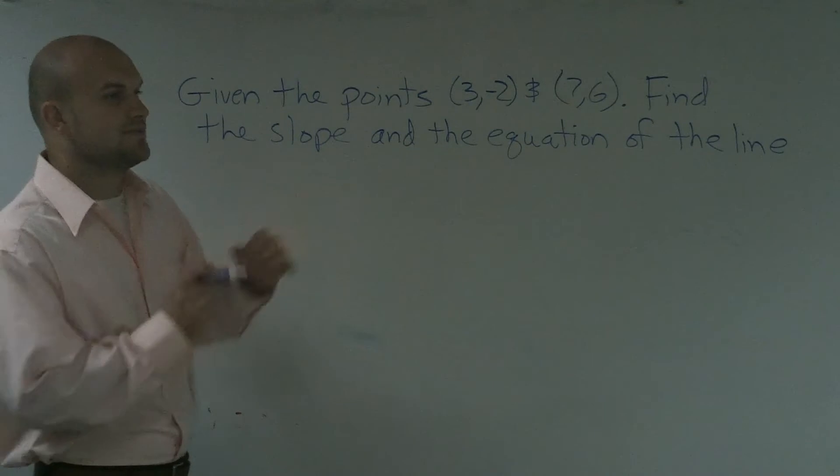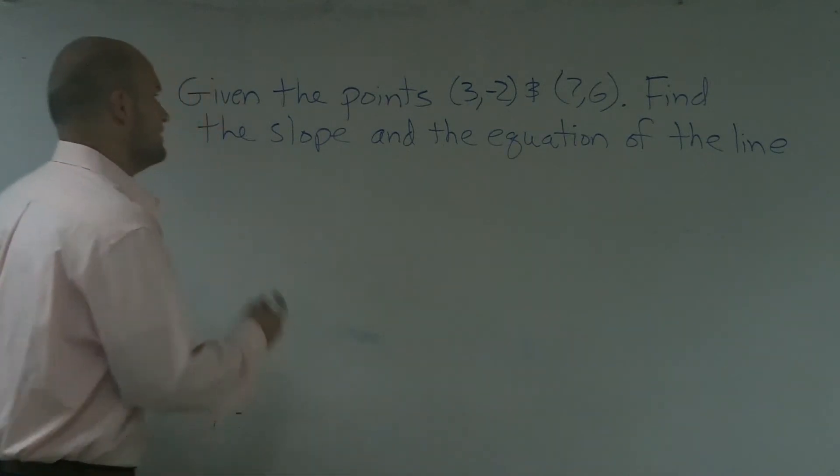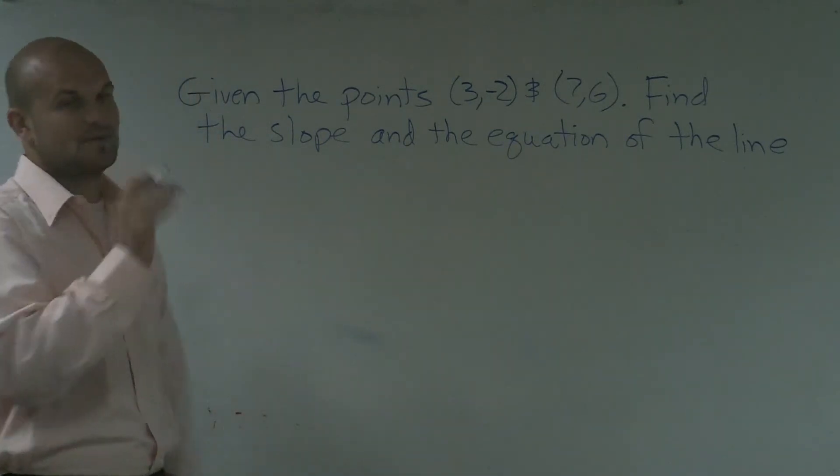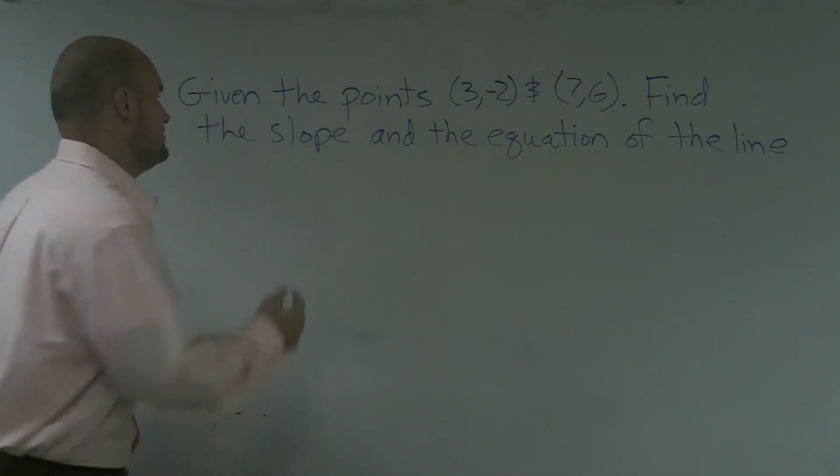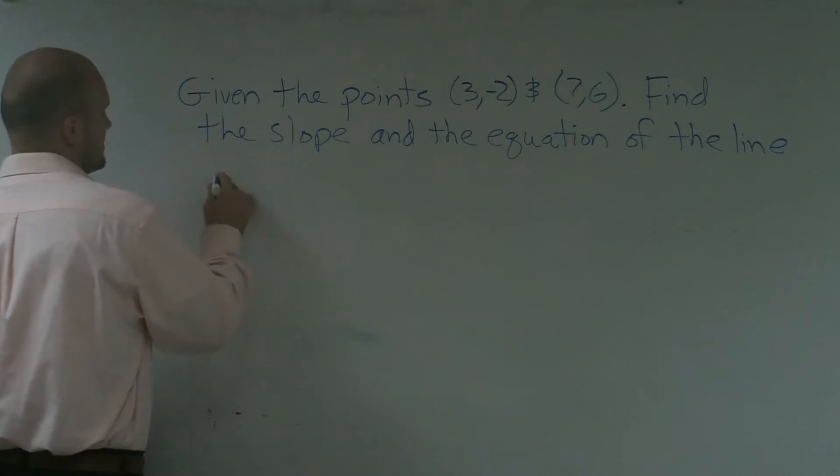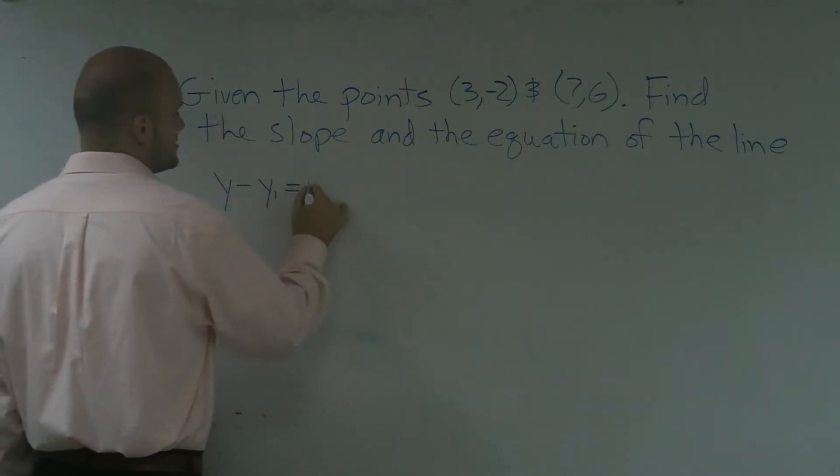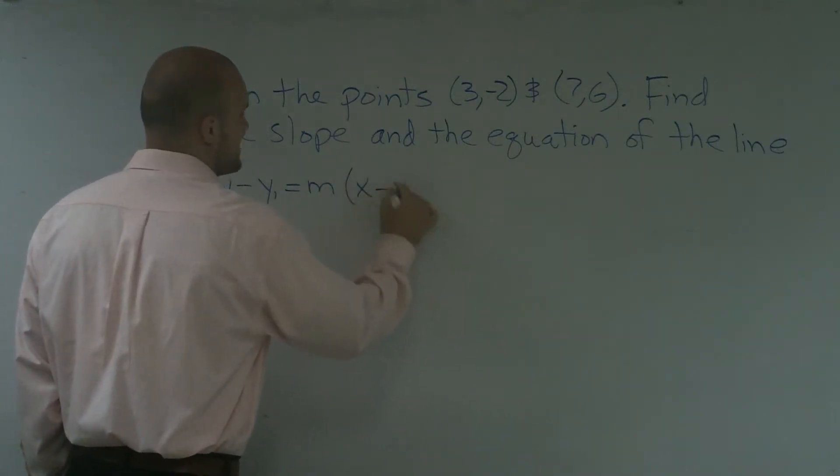So the first thing to solve this problem, I'm going to use the slope-intercept method. And, I'm sorry, not slope-intercept, the point-slope method. And for you guys, when you're using the point-slope method, the main thing you've got to remember is what actually is the point-slope form. So that is y minus y1 equals m, which is our slope, times x minus x1.